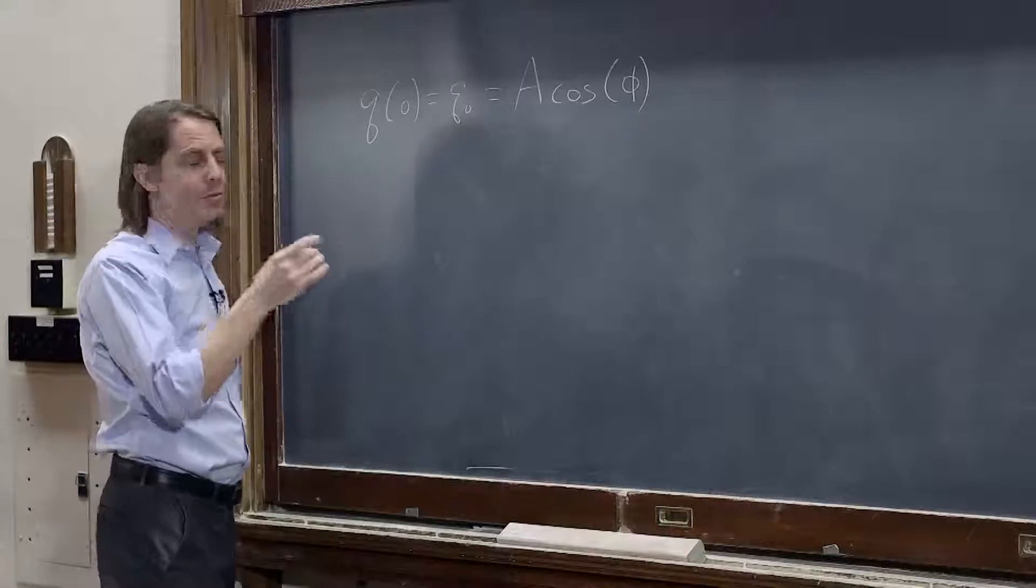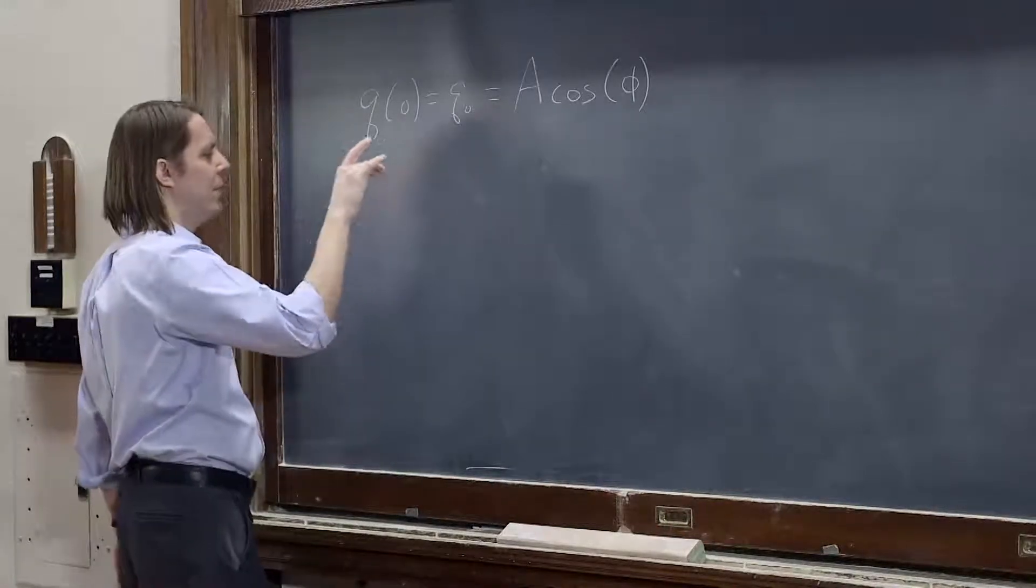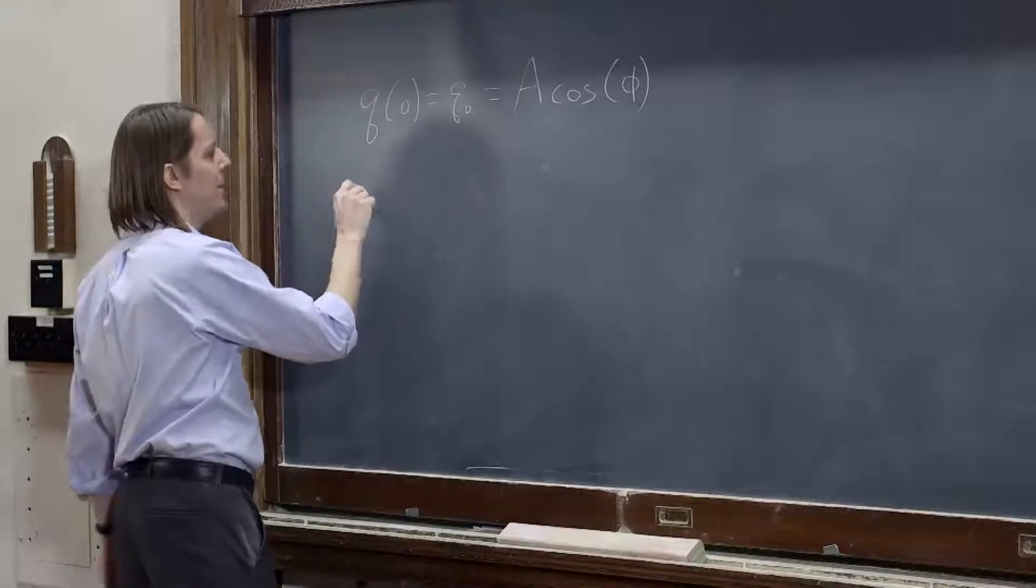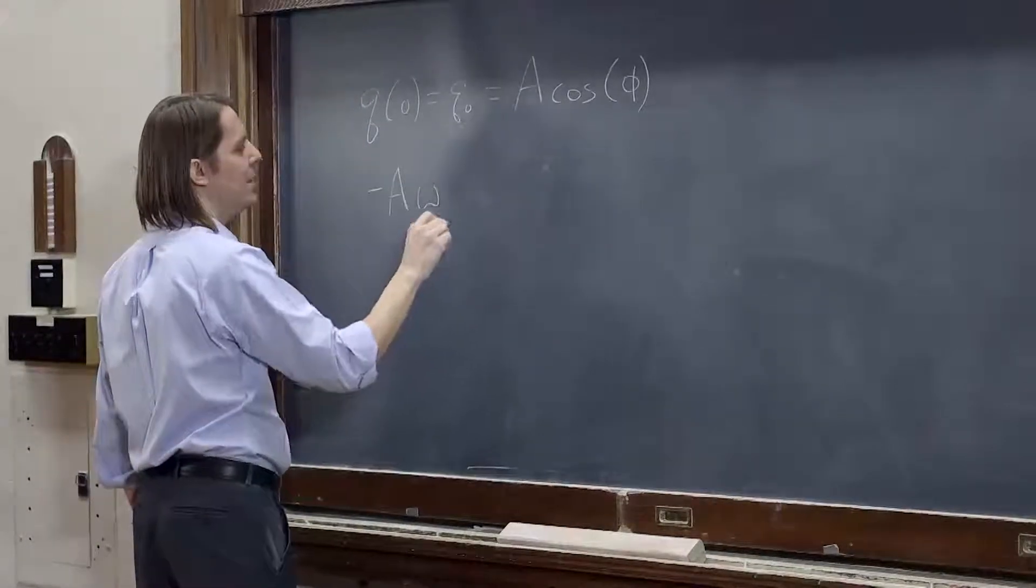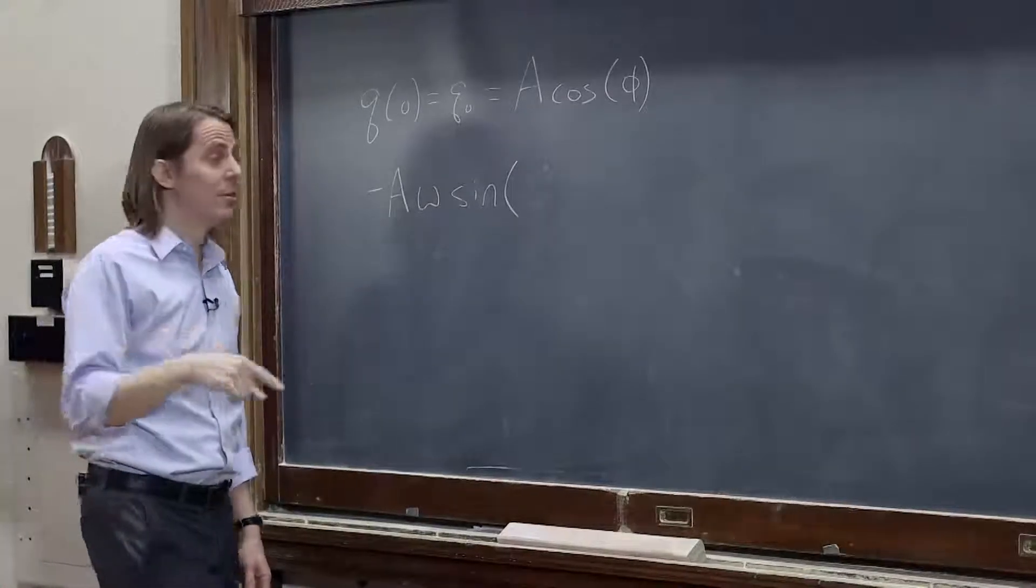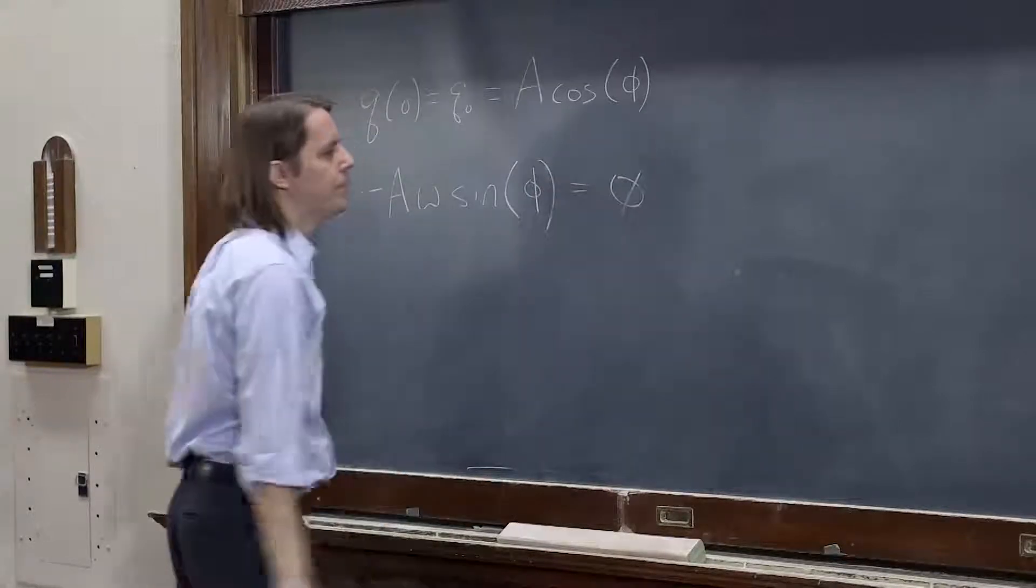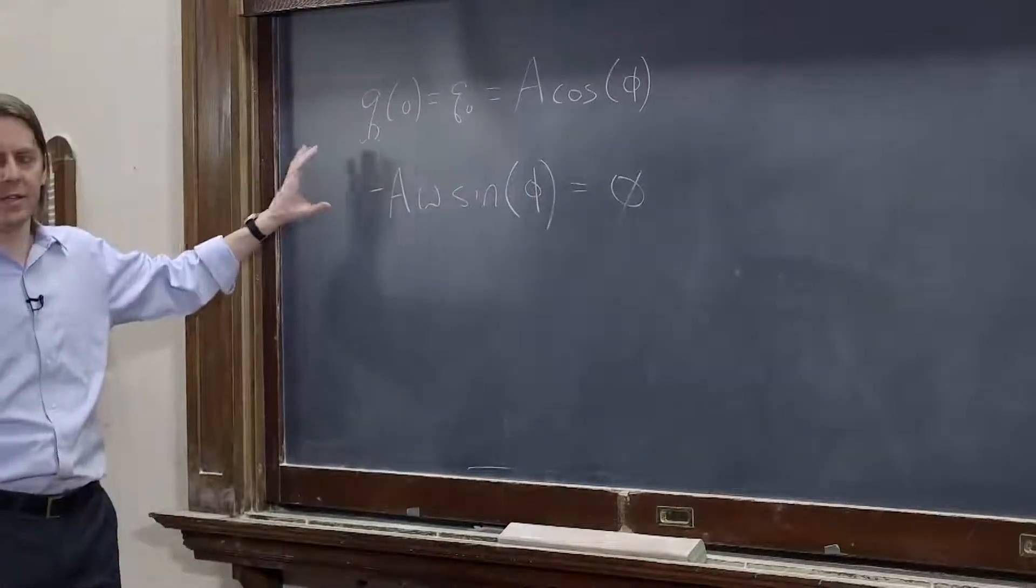And then the other one, the derivative, the fact that dq dt is zero, would just be that, I'll take the derivative of cosine as a negative sine, pull out an omega, so minus A omega sine omega t at time zero, phi is still there, that equals zero. This is the dq dt part.